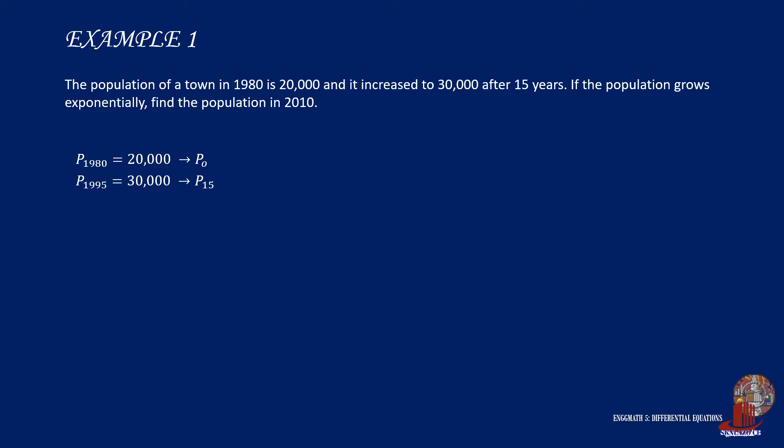15 years later, the population rose to 30,000, and that would be 1995. The requirement is asking for the population by the year 2010, which is about 30 years after. The general equation just derived is x equals c times e raised to k times t. So let's change x into p to stand for population.